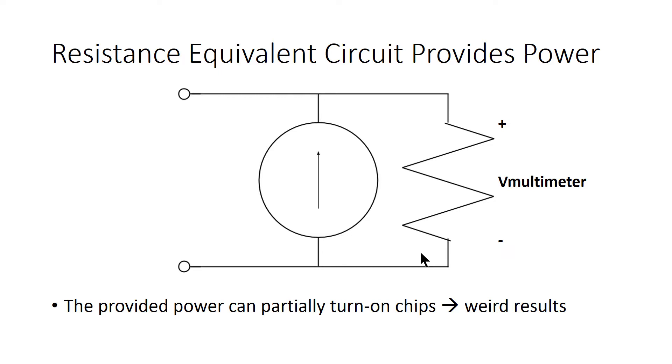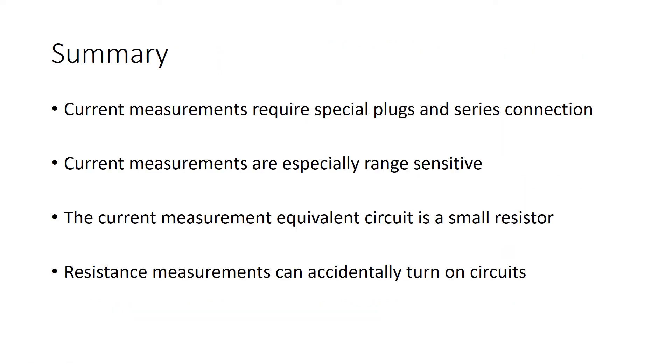The problem is if you accidentally forget you're in current mode and put it in parallel with a circuit, then you've just created a short circuit around your circuit under test, and that usually blows up the multimeter. Be really mindful to put your current mode multimeters in series with your circuits and not in parallel.